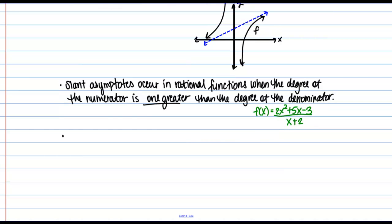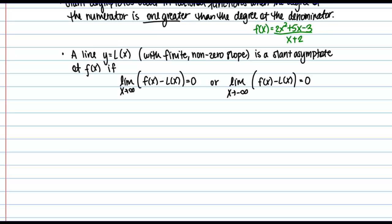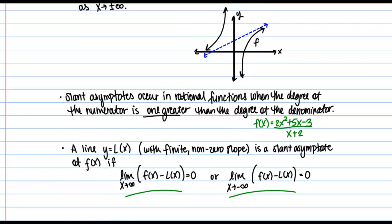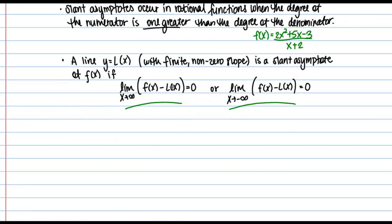Let me give you the technical definition of a slant asymptote. A line y equals L of x — a line with finite non-zero slope, meaning it's not horizontal or vertical — is a slant asymptote of our function f of x if the limit as x goes to infinity of f of x minus L of x equals 0, or the limit as x goes to negative infinity of f of x minus L of x equals 0. This is saying that as x goes to infinity, f of x and the line L of x get closer and closer together, so the limit of their difference goes to 0.